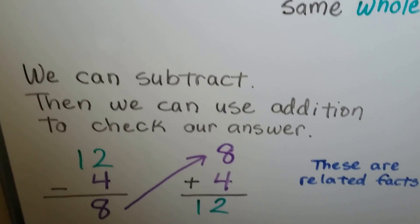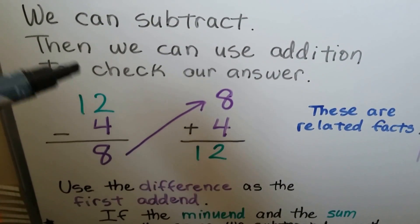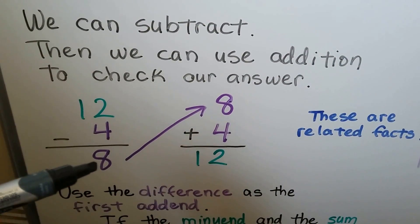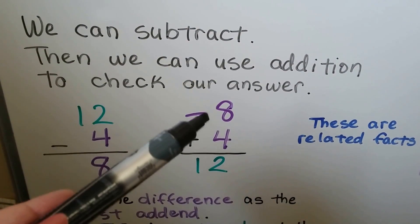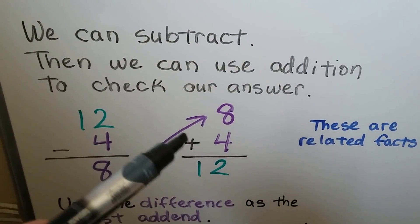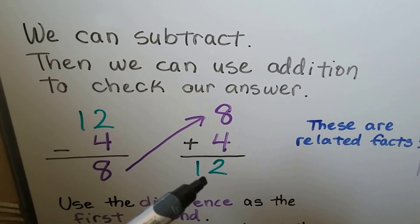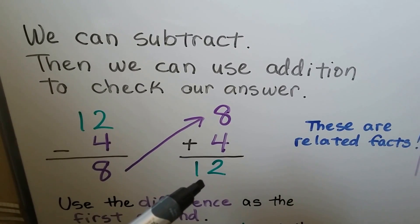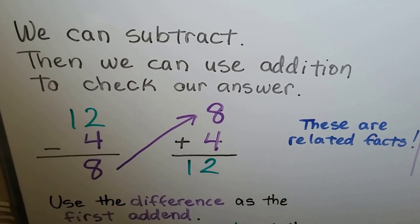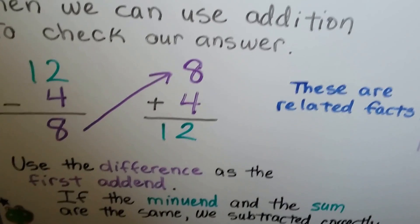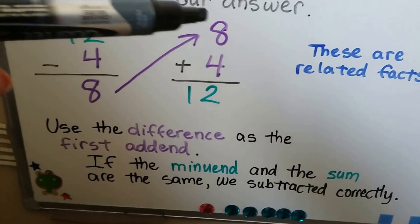We can subtract, then use addition to check our answer. Twelve minus four is equal to eight. We put the eight up here as an addend and add it to the four, and it equals twelve. The sum and the minuend are the same. These are related facts — we use the difference as the first addend.